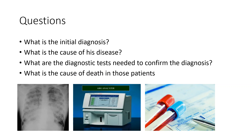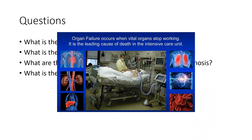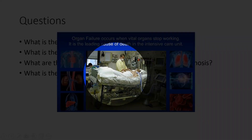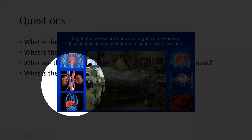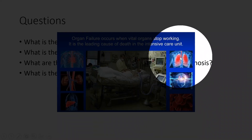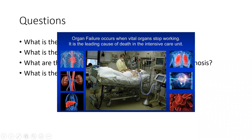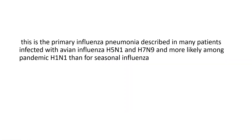In this patient, the cause of death is usually complications with organ failures — when vital organs stop working. These include heart failure, renal failure, liver failure, respiratory failure, and bleeding tendency. This is primary influenza pneumonia.